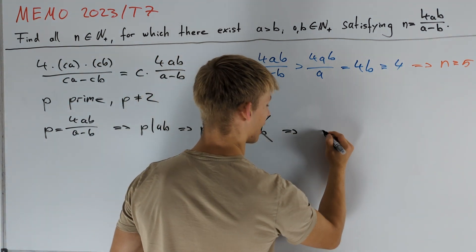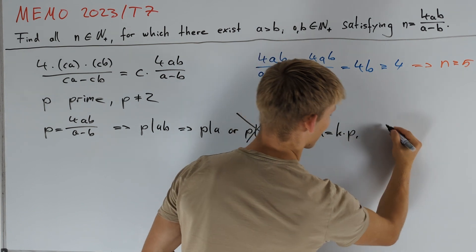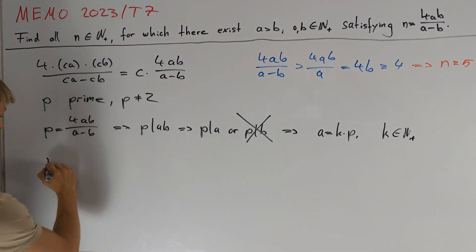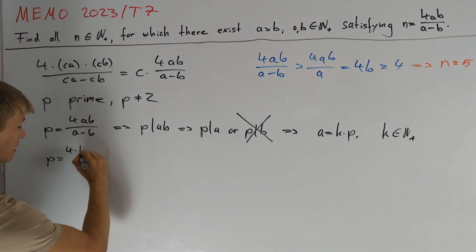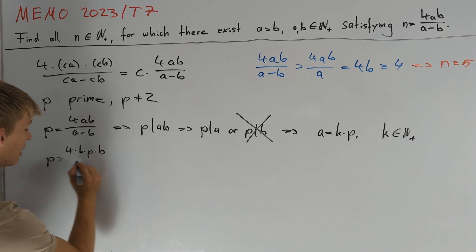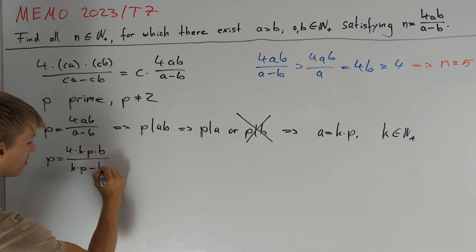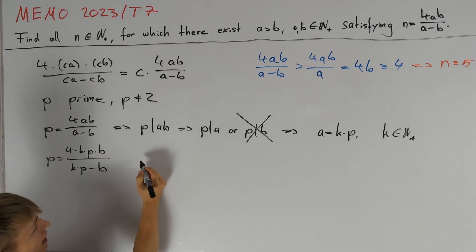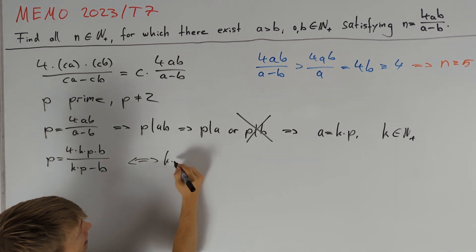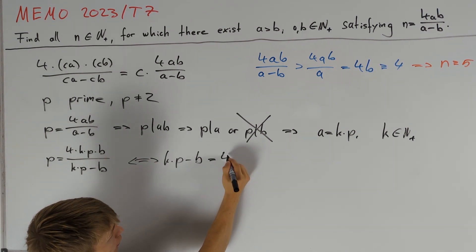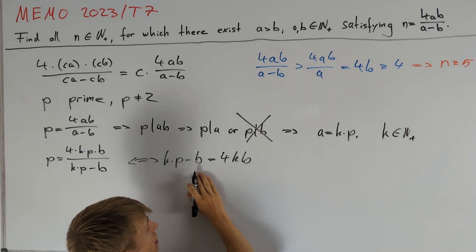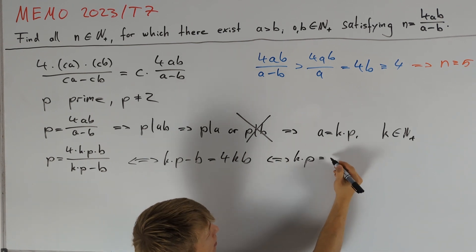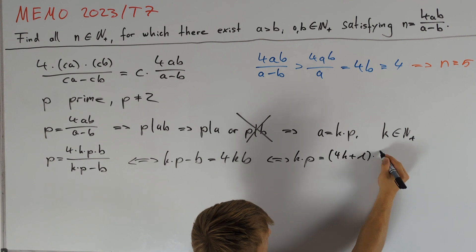This means we can write a equals k times p where k is a positive integer. The equation becomes p equals 4kpb divided by kp minus b. Dividing both sides by p and multiplying by the denominator gives kp minus b equals 4kb. Bringing b to the right-hand side gives kp equals (4k plus 1) times b.